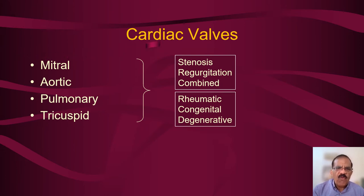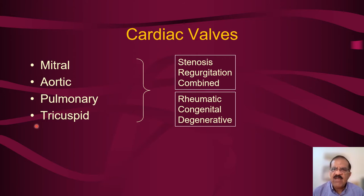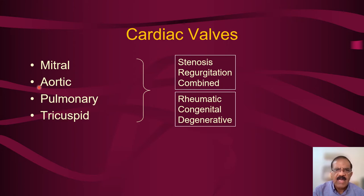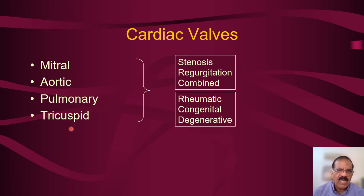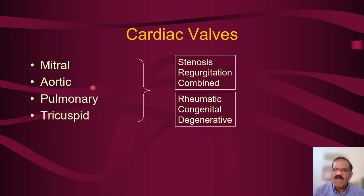We have four valves in the heart: the mitral valve, the aortic valve, the pulmonary valve, and the tricuspid valve. Theoretically any valve could be affected, but because the left side is a high-pressure system and is prone to more damage, the commonest valve involved in rheumatic valvular heart disease is mitral, followed by aortic. Pulmonary and tricuspid valves are only rarely affected, and in most patients there would be mitral valve damage with or without other valvular involvement.